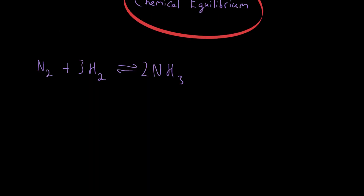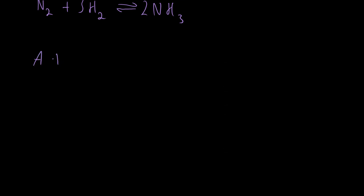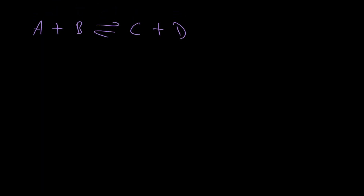In your book you have an example: A + B gives you C + D, where A, B, C, and D are just four different chemicals. Let's say we start off only with A and B. At the start we have lots of A and B and none of C and D. As the reaction goes on, we get less of A and B and slightly more of C and D.